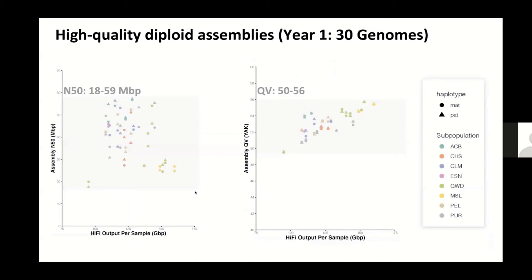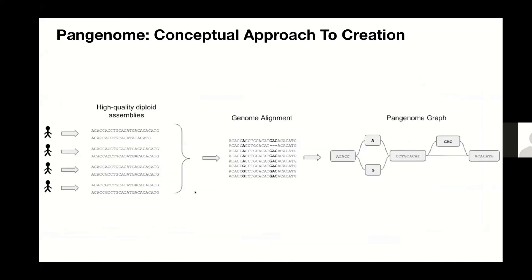I want to emphasize the quality of the diploid contig assemblies we're working with in year one. The assembly N50, in megabases, is extremely high — ranging from 18 to 59 megabases. We have consistently high quality values for the assemblies in the range of Q50 to Q56, and we see this consistency across all subpopulations as well as across maternal and paternal haplotypes. We work through assembly methods and QC to reach these extremely high-quality diploid assemblies.